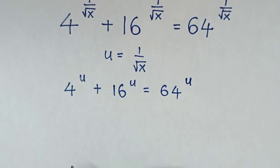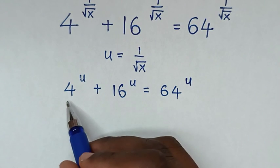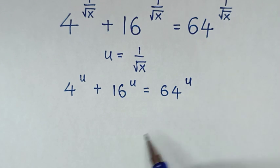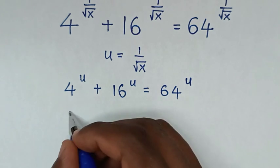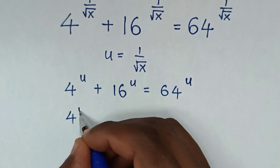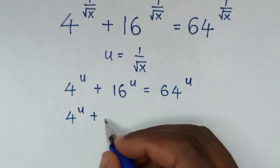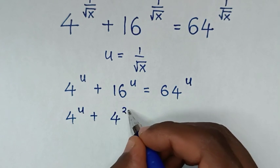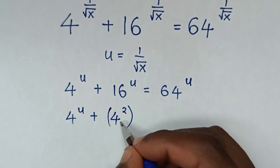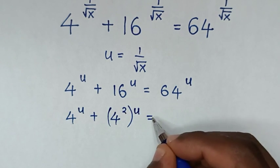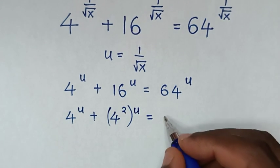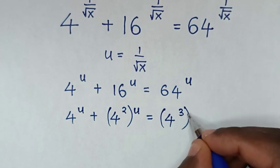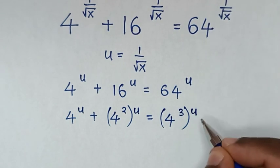In the next step, we make this equation have the same base of 4. So it will be 4 to the power of u, plus 16 — which is the same as 4 squared — bracket to the power of u, equals 64 — which is the same as 4 to the power of 3 — bracket to the power of u.